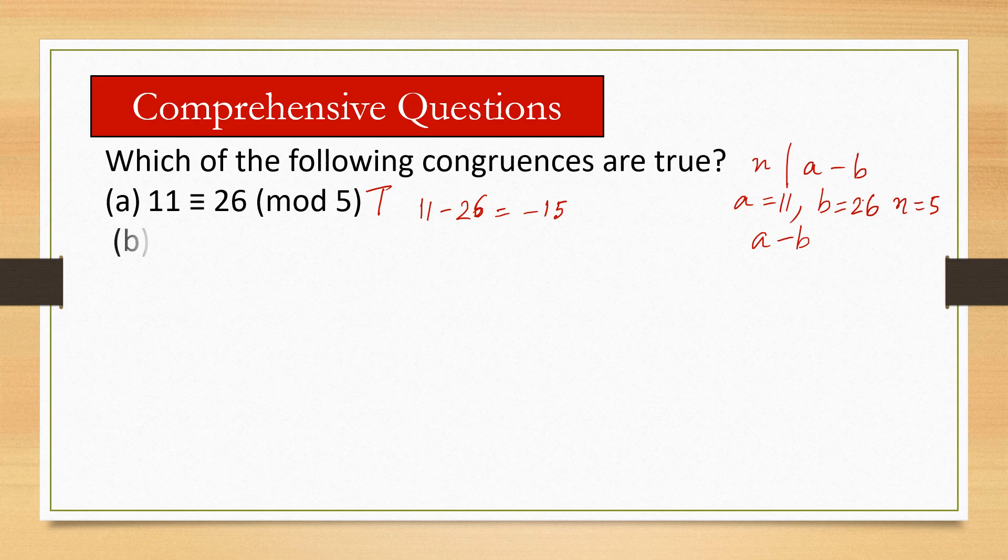Next question: (b) 9 ≡ -9 (mod 5). So 9 minus negative 9, this will be 18, is divisible by 5? No, so this is false.